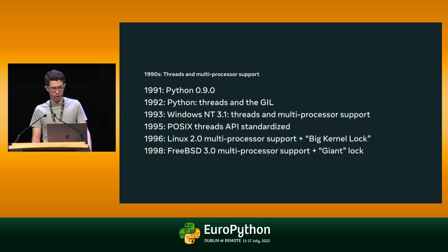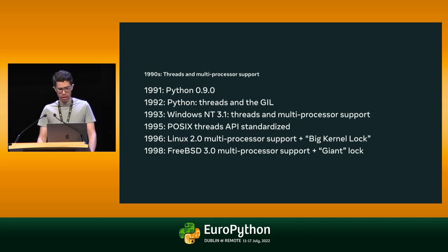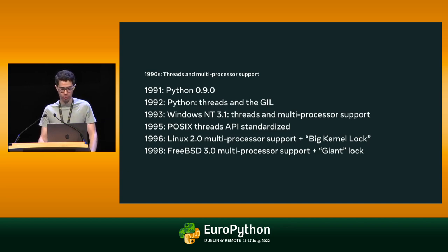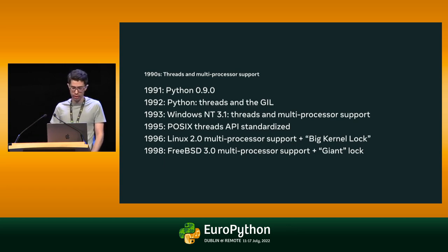For context, the 1990s saw a number of operating systems add better support for threading and support for computers with multiple processors. There's an interesting analogy between the introduction of threads in Python and multiprocessor support in some of these operating systems. At least in the cases of Linux and FreeBSD, support for multiple processors was accompanied by the introduction of global locks — the big kernel lock in Linux and a lock called giant in FreeBSD. The big kernel lock ensured only a single thread could enter the kernel at a time. Over time, it was gradually replaced by fine-grained locking and was completely removed from Linux in 2011.